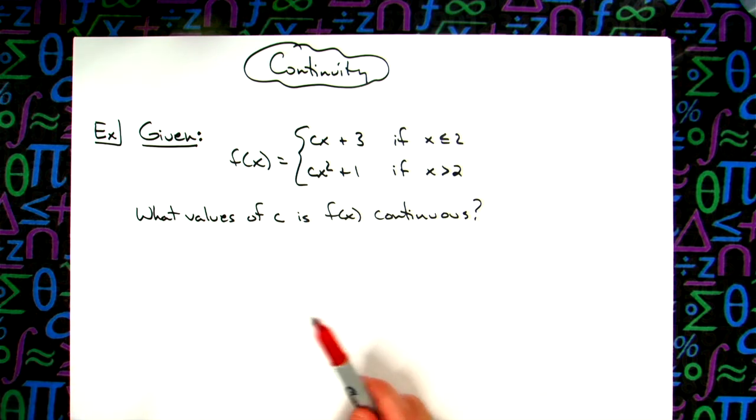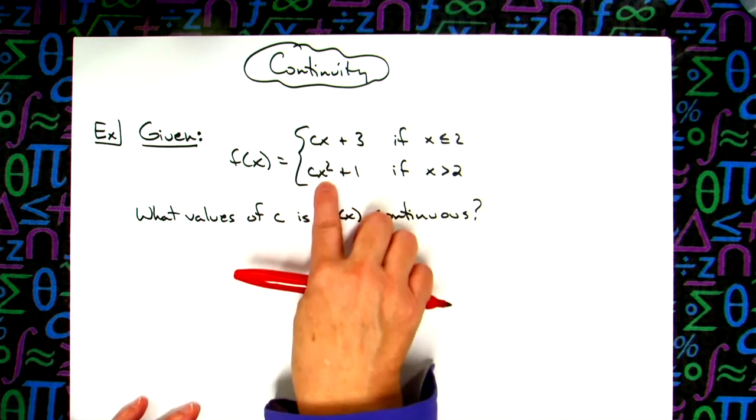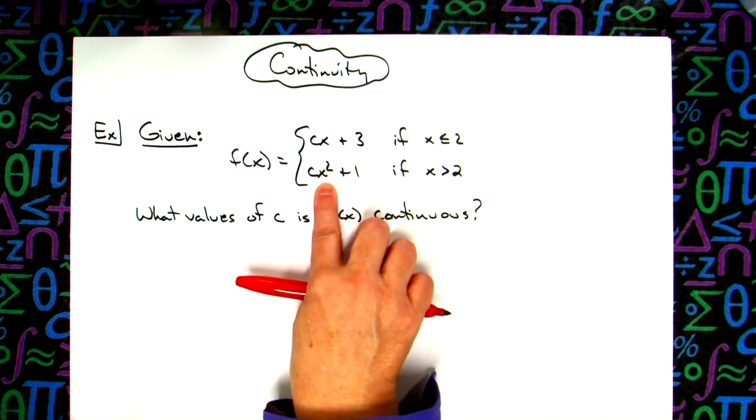The easiest way to do this is to set these two quantities equal to each other and replace x with two in the top one and with two in the bottom one.